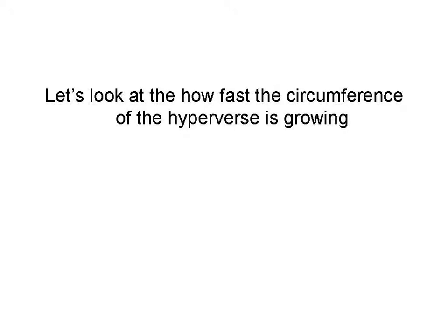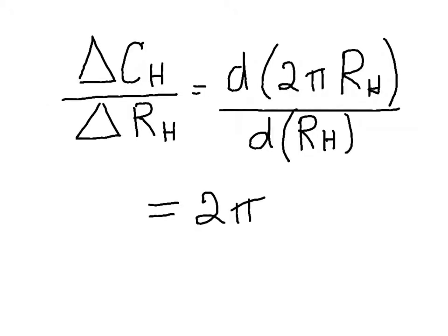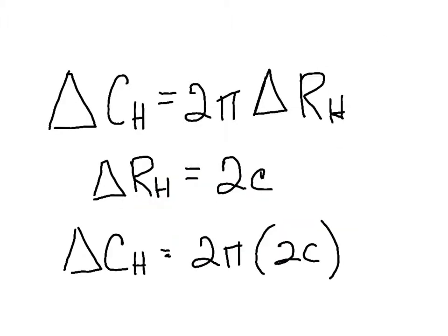Let's look at how fast the circumference of the observable hyperverse is growing. The rate of change of the circumference as a function of the radius is 2π. Rearranging, we find that delta c sub h is 2π times delta rh, but we know that the rate of change of the radius is 2c. Substituting that in gives us 2π times 2c.